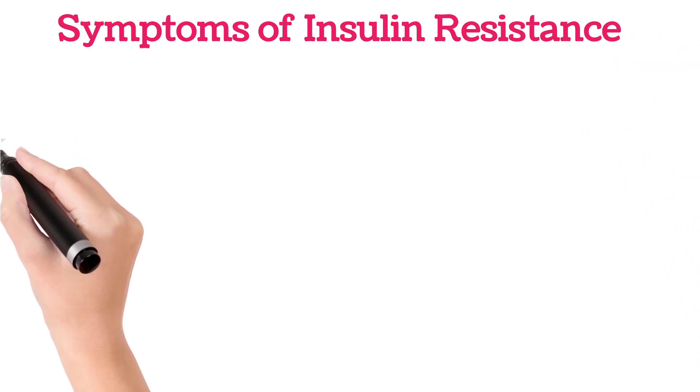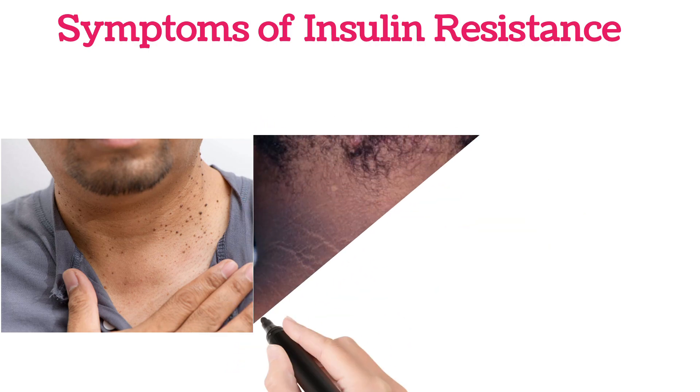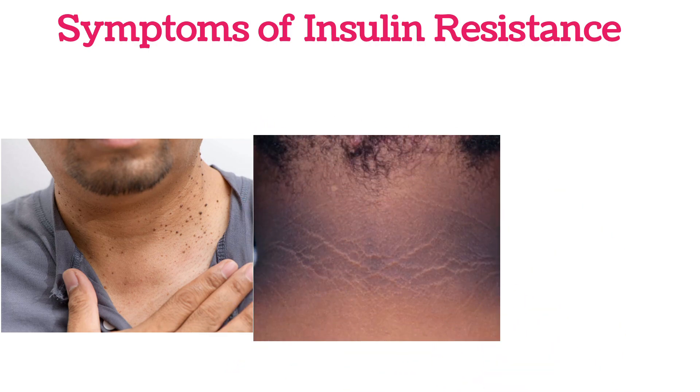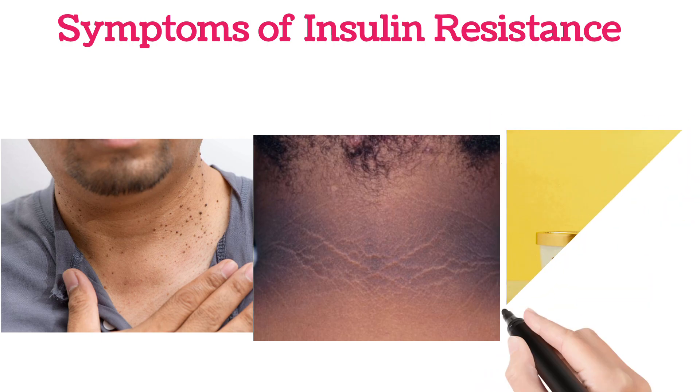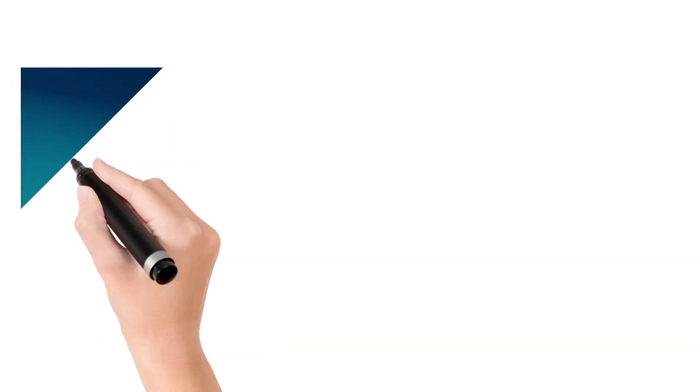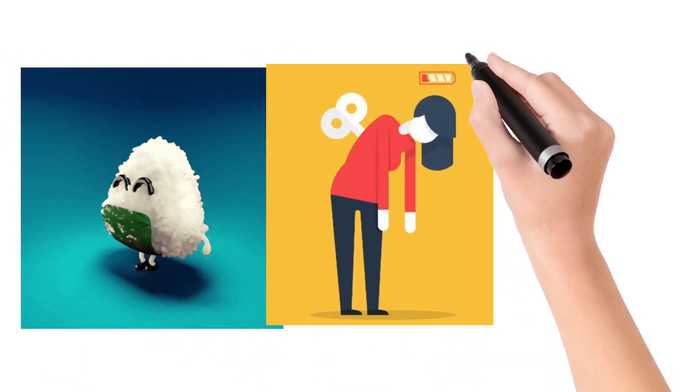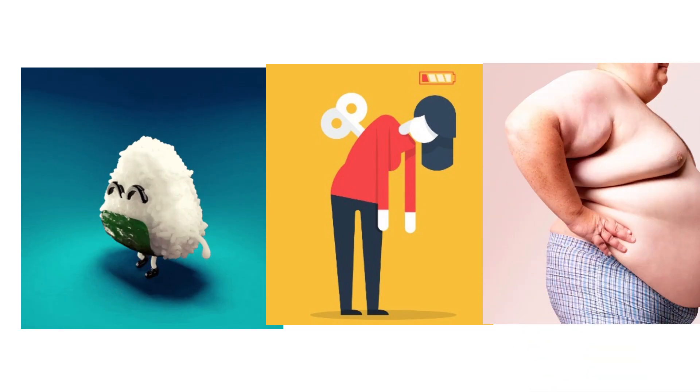There will be skin tags and dark pigmentation on the neck, underarms, etc. There are high sweet cravings, and the person feels hungry immediately after a meal. They feel tiredness, and along with these symptoms, there will be belly fat.